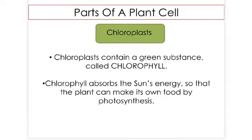Chloroplasts are green because they contain a chemical called chlorophyll. Chlorophyll is needed by plants in order to produce their own food or energy, and this is something that we looked at last term. Pause the video and copy the information.